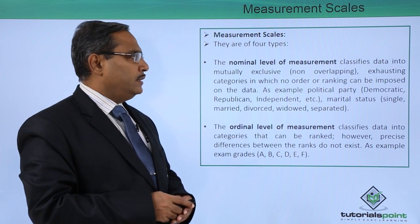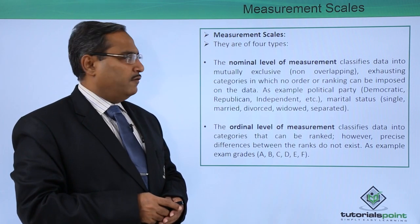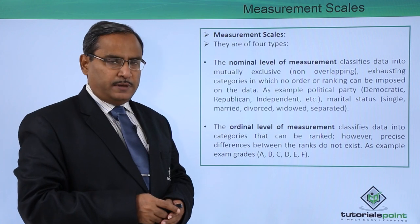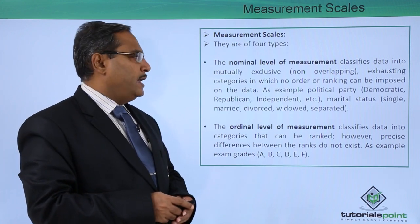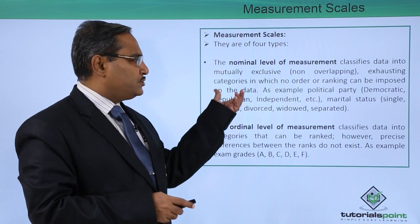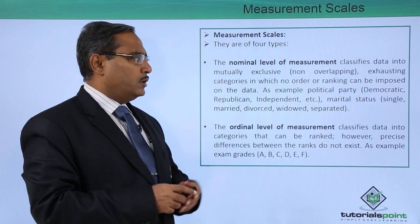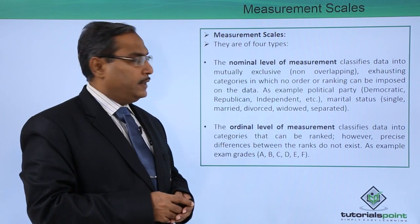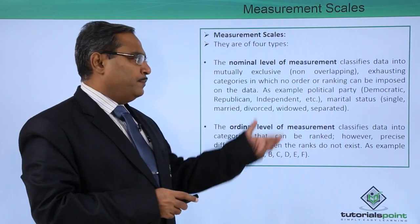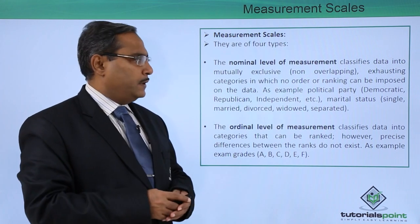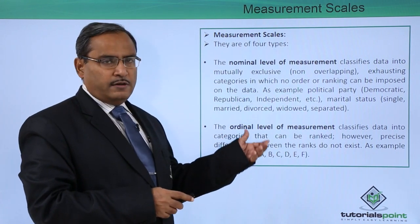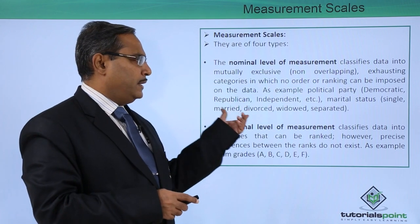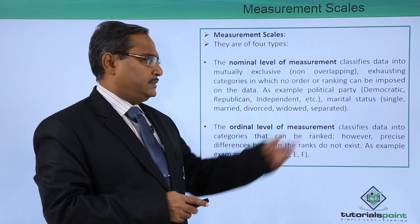The first type is our nominal level of measurement. It classifies data into mutually exclusive, non-overlapping and exhausting categories in which no order or ranking can be imposed on the set of data. As an example, we can consider political party, where the different values might be democratic, republican, independent, etcetera.